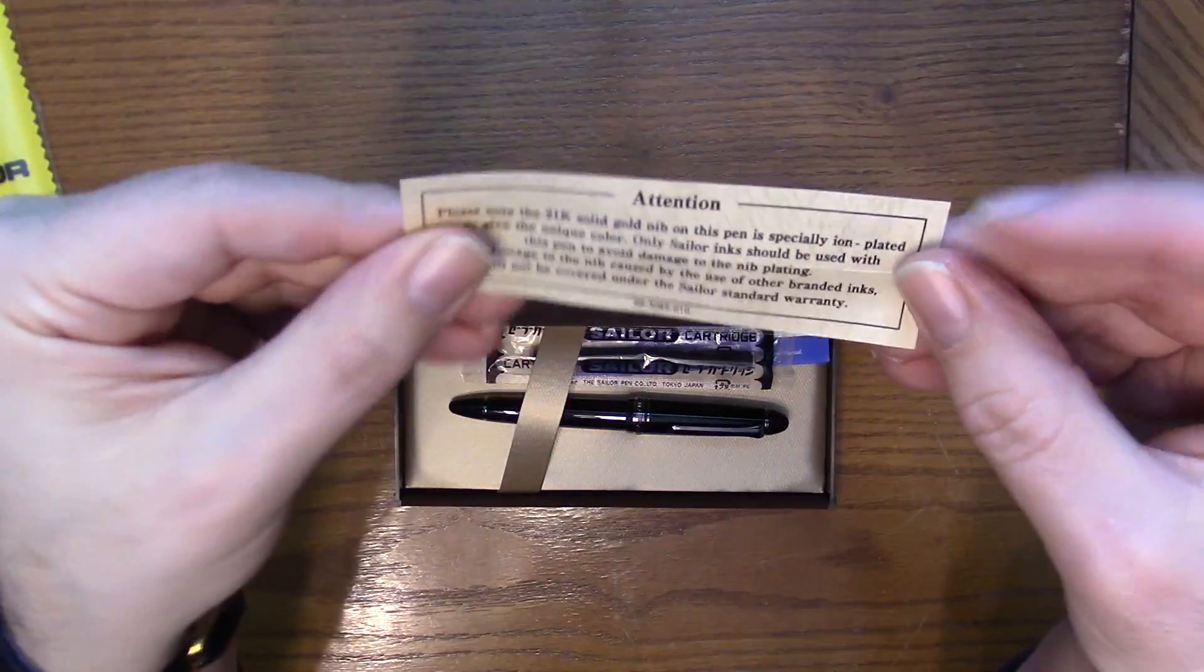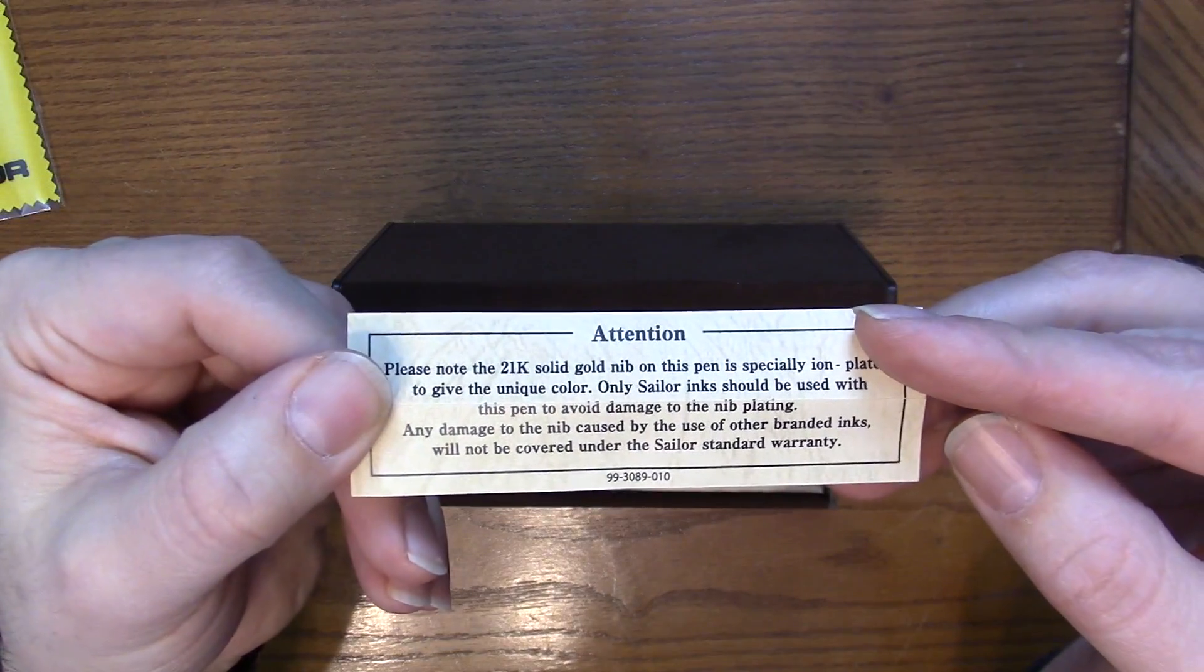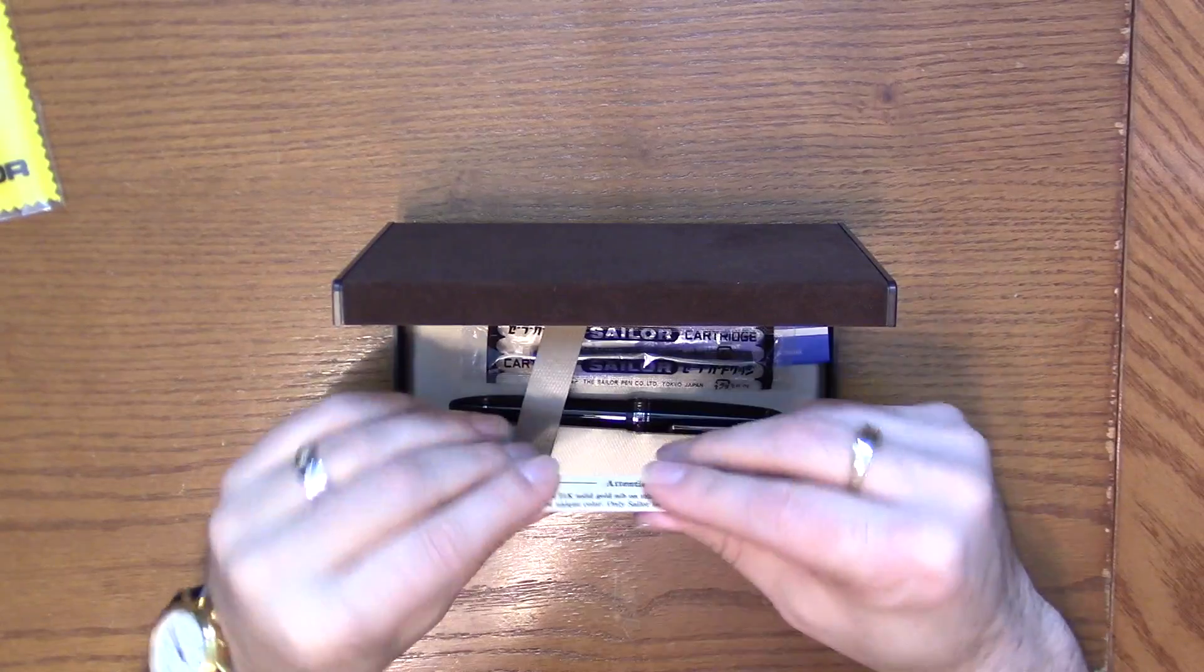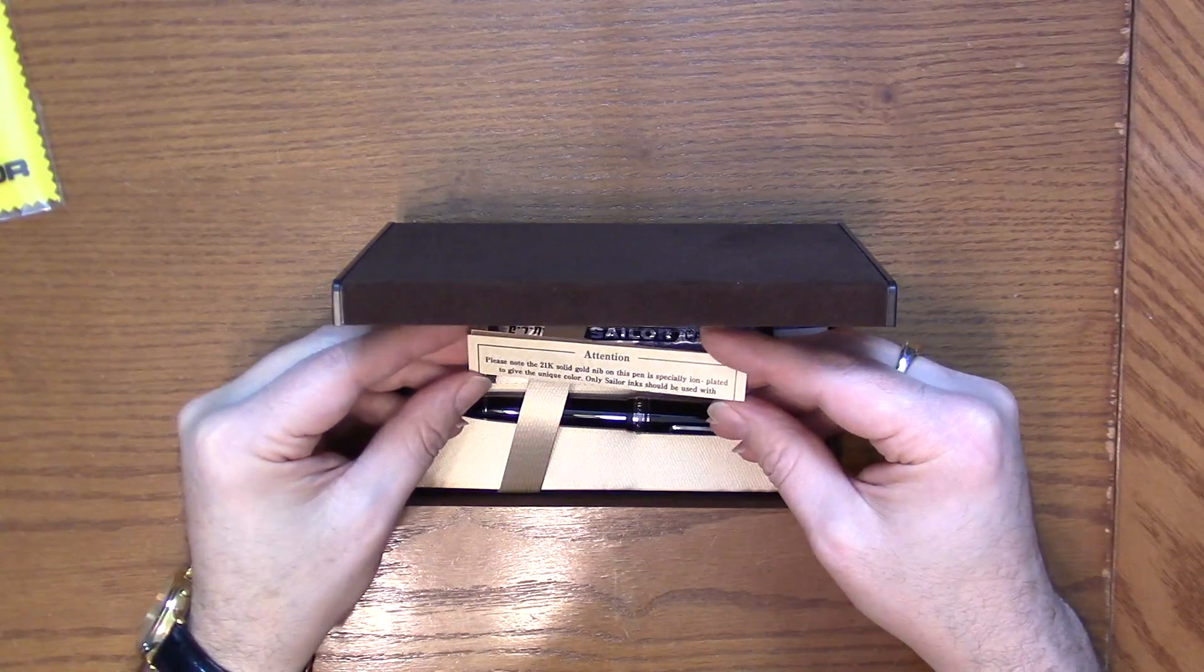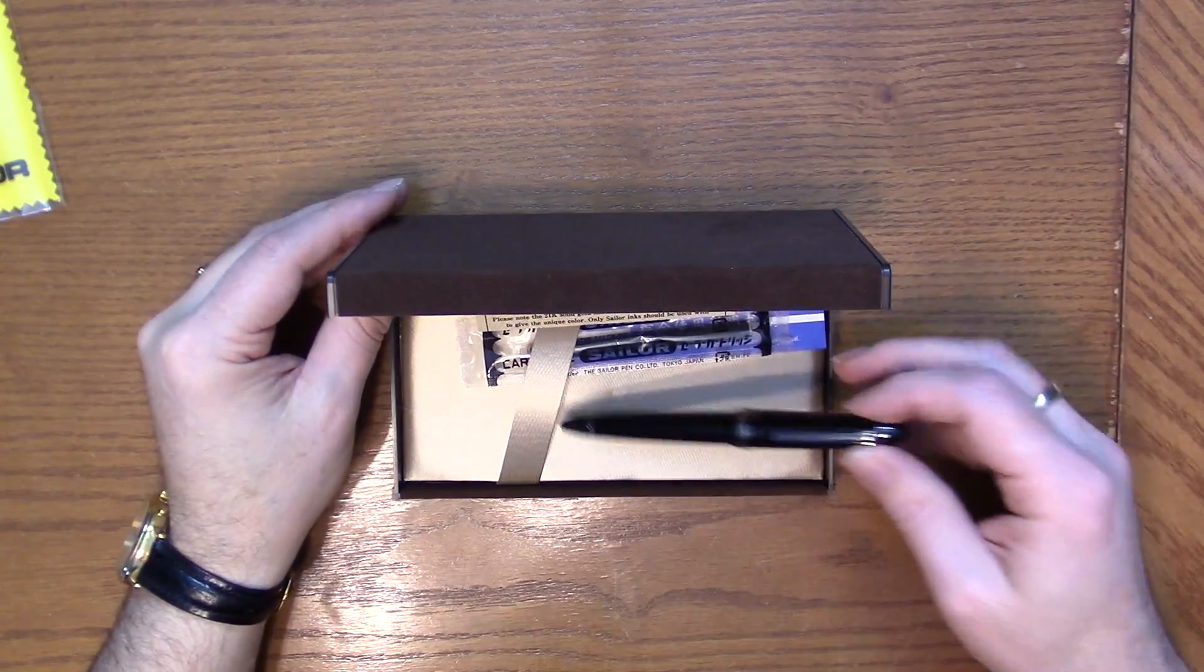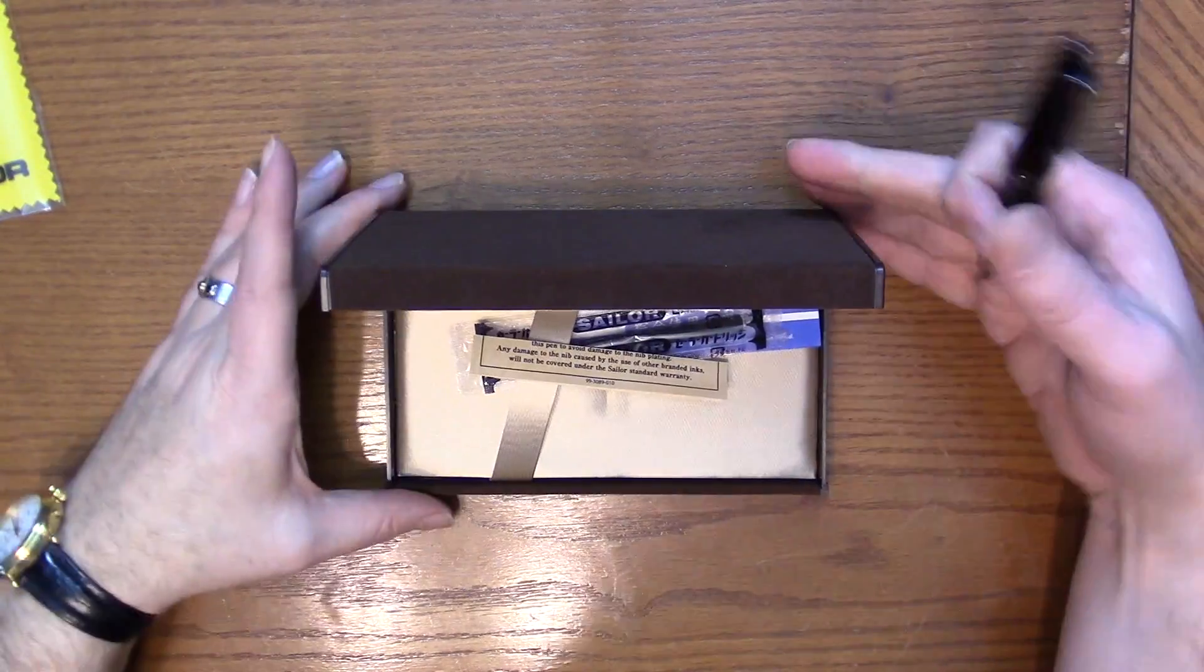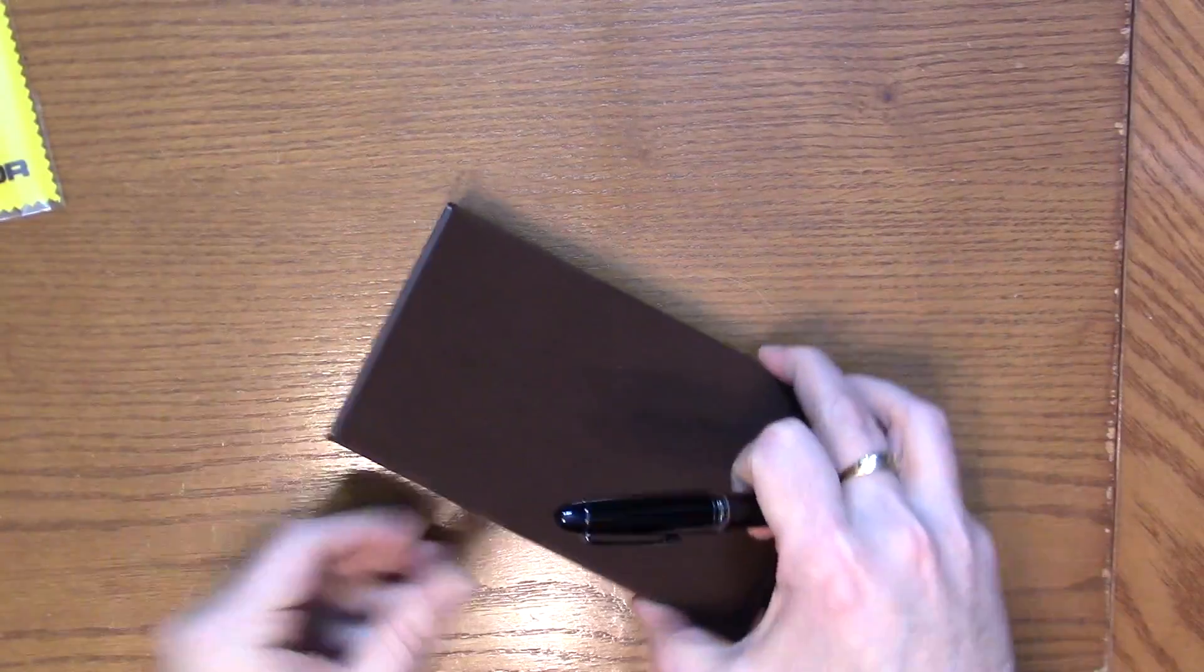For those who have seen the Pro Gear Imperial Black, you're familiar with this. It warns you that the nib has been ion plated to give the unique color, and only Sailor ink should be used with the pen to avoid damage to the plating.